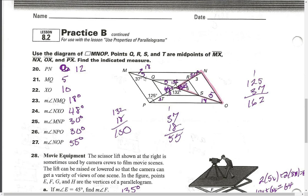MQ is 5 for the same reason: this little piece is 5, so all of these little pieces are also 5. XO is 10, just add 5 plus 5 together. The measure of angle NMQ is this one here.